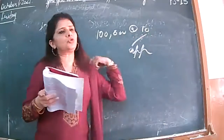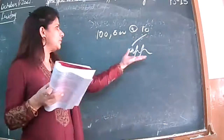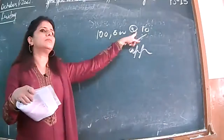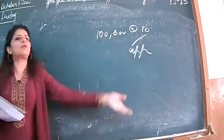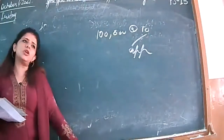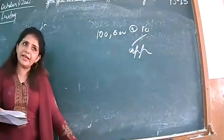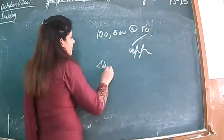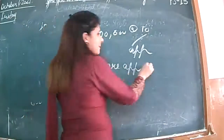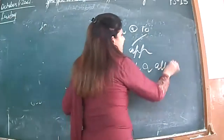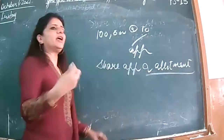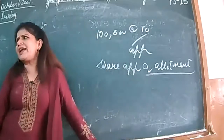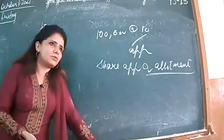All the money is received in the application itself. First entry: bank account debited to share application — 10 lakh. Second entry: share application account debited to share capital — 10 lakh. When the company receives money in a single installment, we give it a combined name — not just 'application' but 'share application and allotment account'. If the amount is received in a single installment, we use this combined account name.